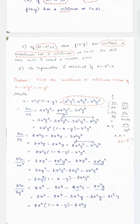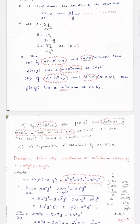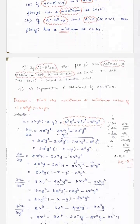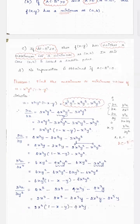Since we need a critical point (a, b) to find the values of A, B, and C, we equate the first partial derivatives to 0, giving us two equations. We solve those equations for x and y to get the critical point. After getting the point, we substitute into the second-order partial derivatives ∂²u/∂x², ∂²u/∂y², and ∂²u/∂x∂y to obtain the values of A, B, and C.